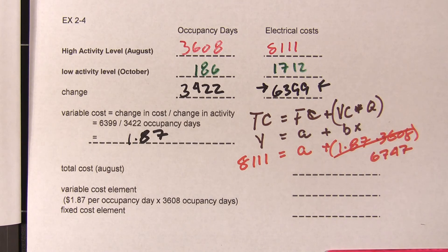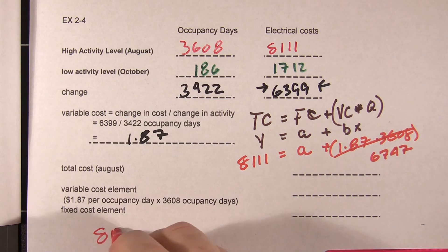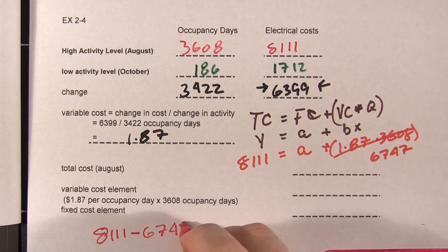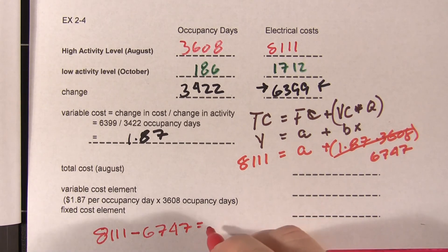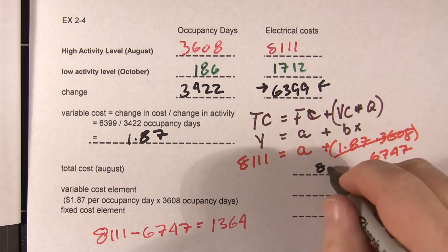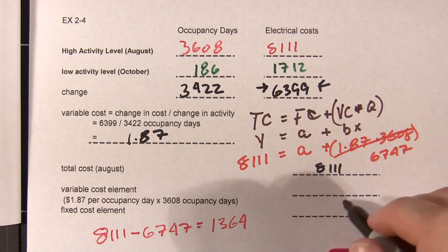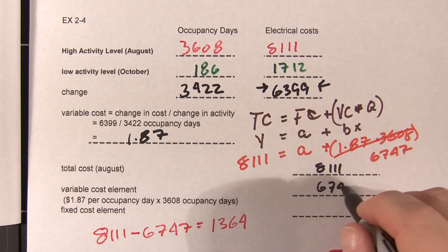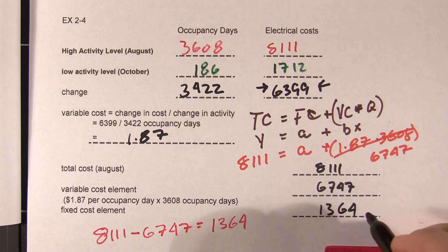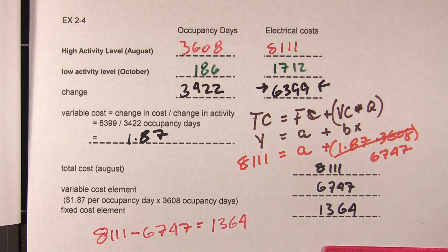To find the fixed portion, we take our total cost of $8,111 minus $6,747, and that gives us a fixed cost of $1,364. So: total cost $8,111, variable cost $6,747, therefore our fixed cost element is the remainder — $1,364. Nice little problem; gives you a chance to play with all the data.